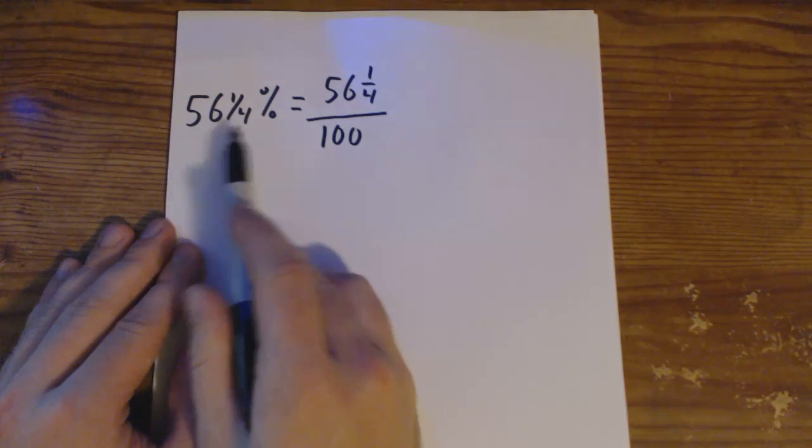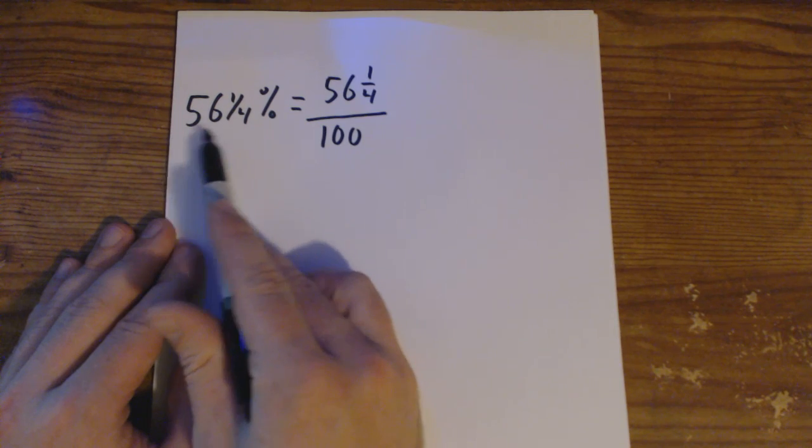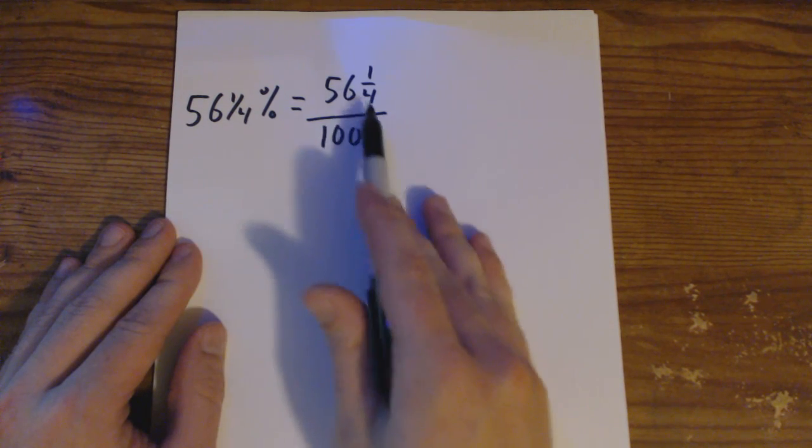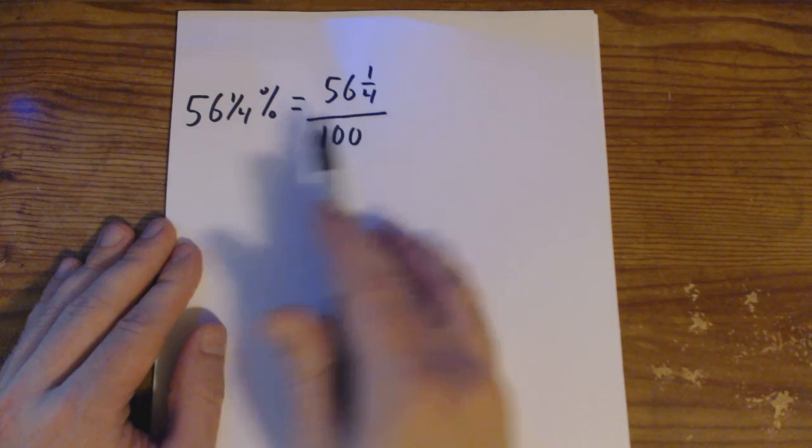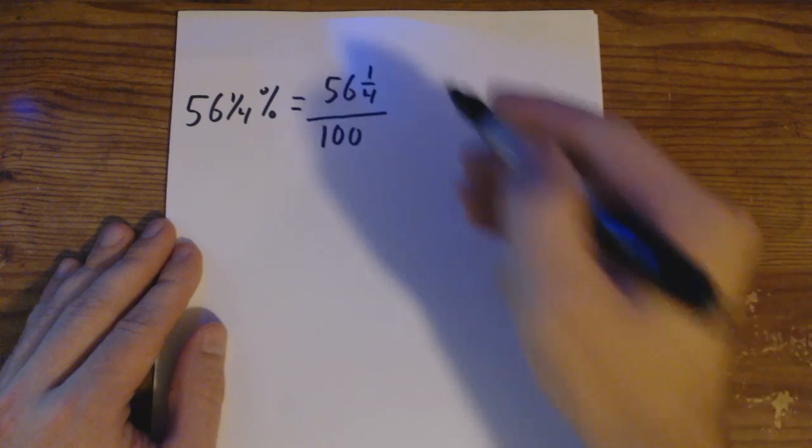divided by 100. Because remember, that's how we get to our percentages. If this was a decimal, it would be 0.5625. So now that we're looking at this, this looks much more complicated than just saying 56 and 1 fourth percent. But we're going to follow the same process and break this down.